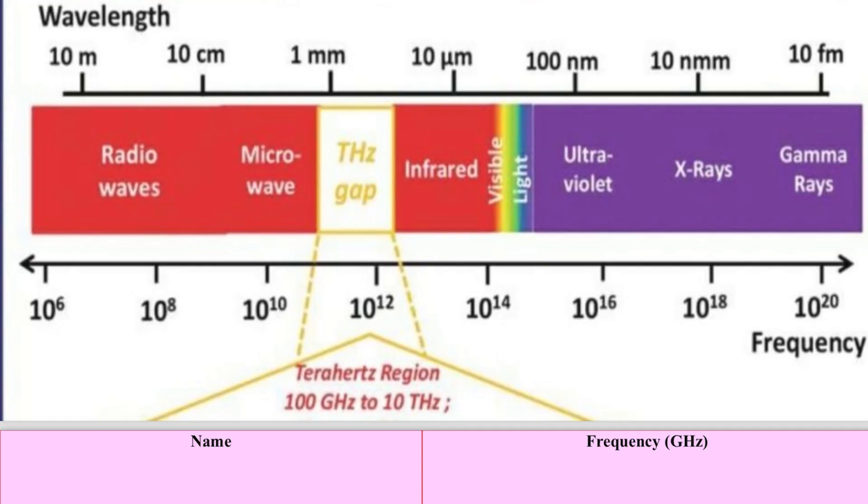Today we will talk about spectrum and antenna design parameters. We are already aware that there is a frequency spectrum whose wavelength spans from 10 femtometer to 10 meter, and in terms of frequency it can be termed as radio waves, microwaves, terahertz, infrared, visible light, ultraviolet, X-rays, and gamma rays. These are already known to most people.